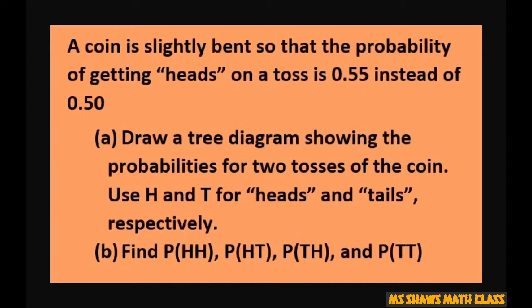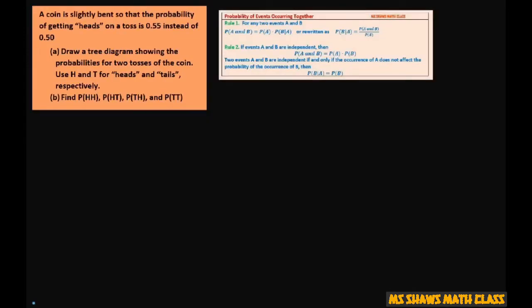We're going to draw a tree diagram showing the probabilities of tossing two coins using H and T for heads and tails respectively. Then we're going to find the probabilities. So let's draw the tree diagram.